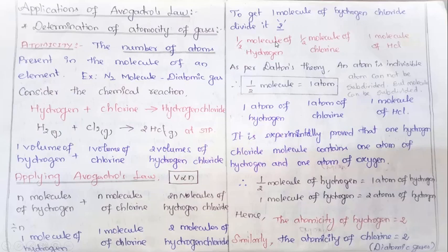We have derived the atomicity of gases using Avogadro's law. The half-molecule concept is very important — half a molecule is nothing but one atom, as per Dalton's theory. I hope this video is very helpful for understanding atomicity. In our next video we will see how to find the molecular formula using Avogadro's law. Thank you so much — we'll see you in the next video. Bye!